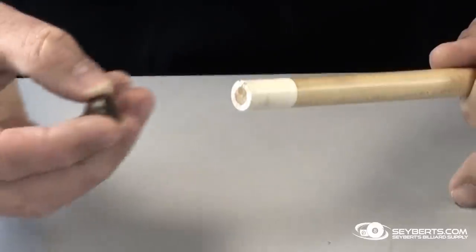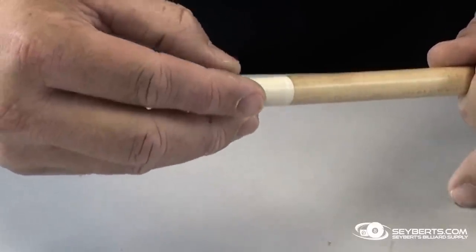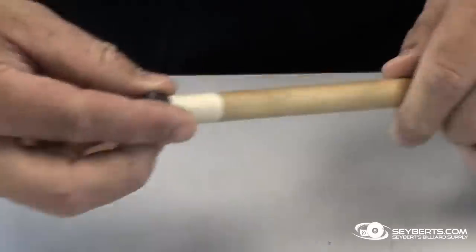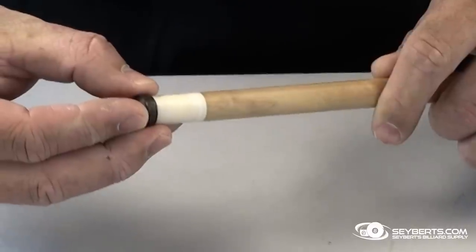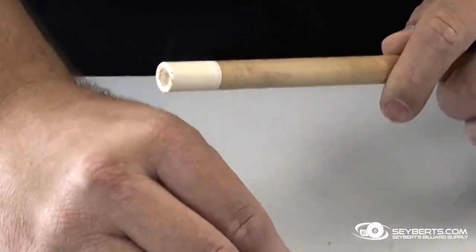So we always use a 14-millimeter tip, so that way it's oversized from the ferrule. No matter if it's a little off-center or not, when you cut the edges off, you're going to be able to get it right down to the ferrule to where it looks perfect, like it was built for it.